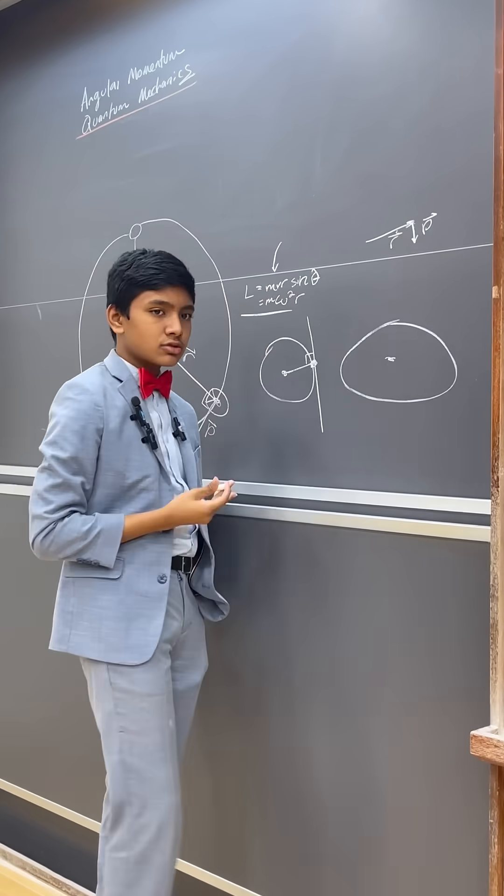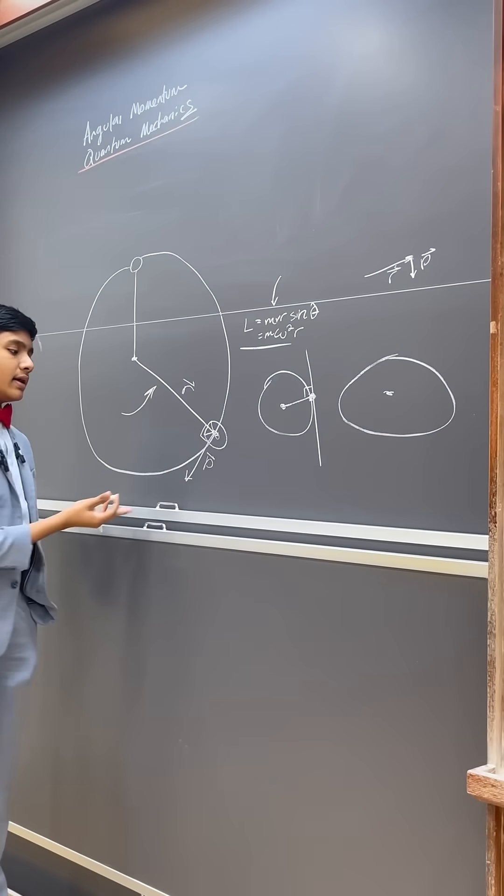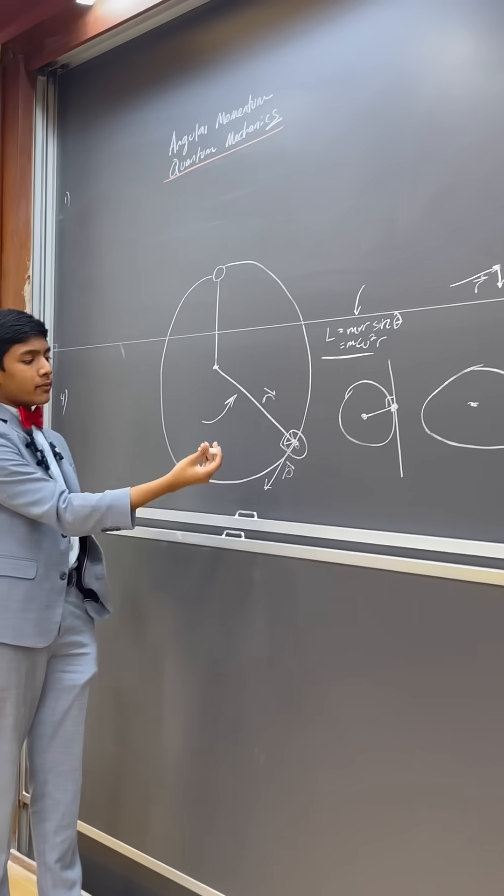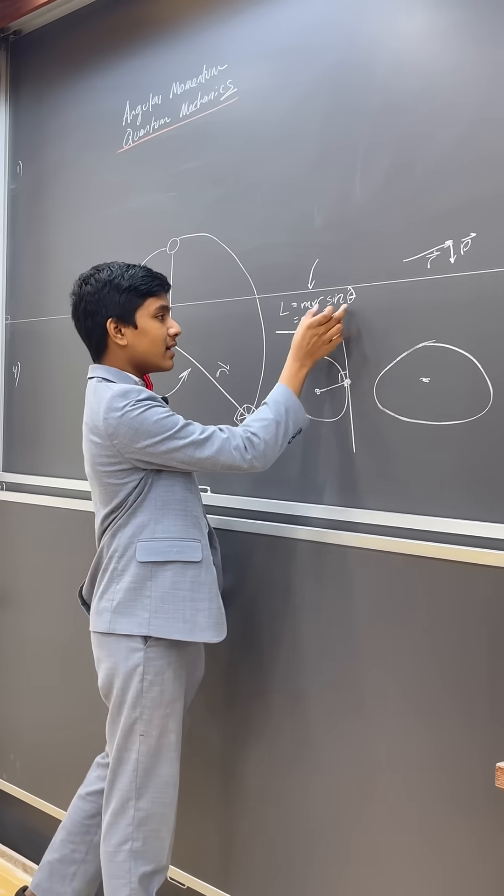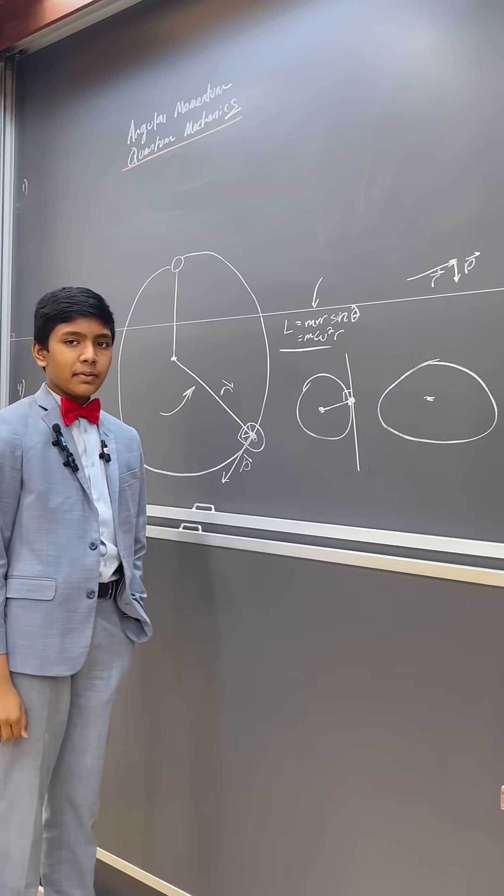That's always equal to 1 if the radial vector and momentum vector are always perpendicular, which is why you don't see it in the circle equation.